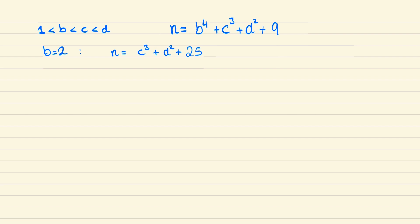And what this also tells us is that since n will be even, c cubed plus d squared must be odd, and hence c and d must have opposite parity.